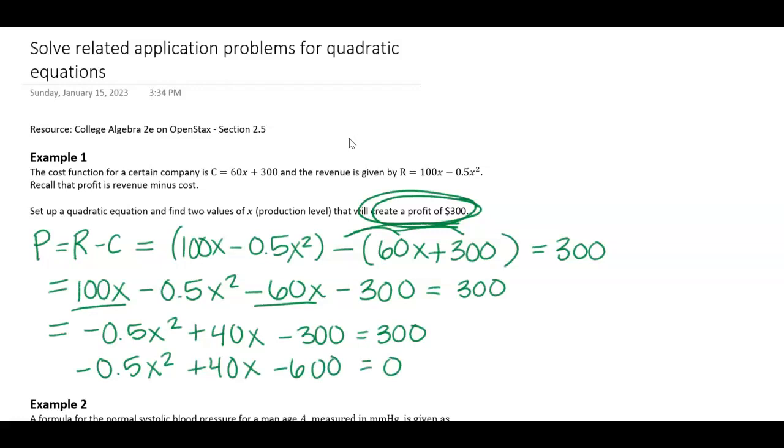I'm going to factor out a common factor of negative 1/2 from each and every one of these terms. If I do that, I get -1/2(x² - 80x + 1200) = 0. I chose to do that because then I have an a = 1 type of equation.